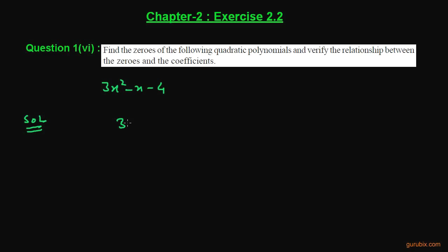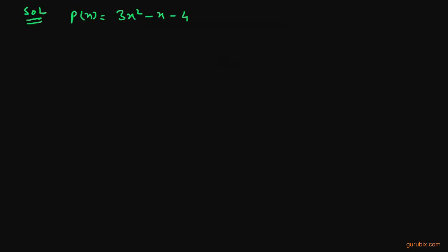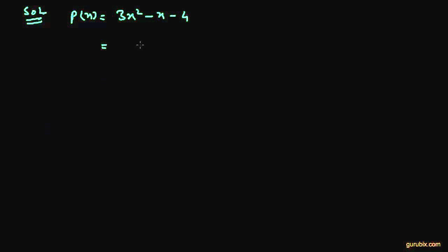First of all, we shall note the given polynomial, that is 3x squared minus x minus 4, and we shall denote it by p(x). Now we shall factorize the given polynomial by using the middle term splitting method.